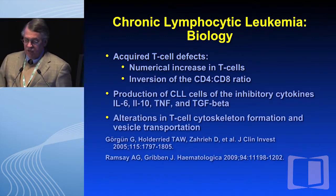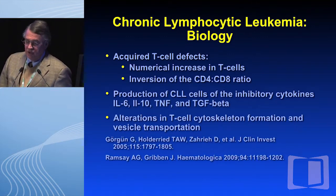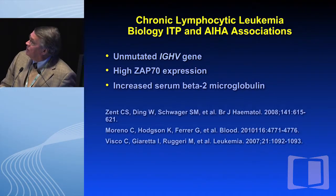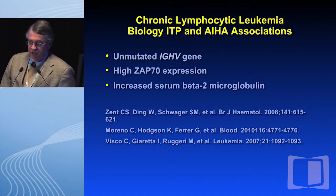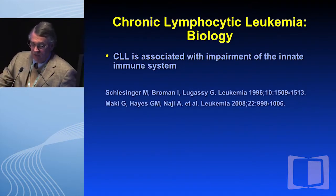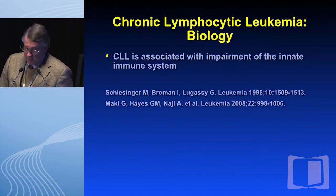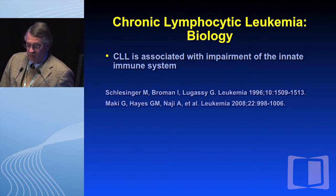There are acquired T cell defects: numerical increases in T cells, an inversion of the CD4/CD8 ratio, inhibitory cytokines, and alterations in T cell cytoskeleton formation and vesicle transformation. As for clinical markers, there are associations with unmutated IGVH gene, high ZAP70 expression, and increased serum beta-2 microglobulin. CLL is associated with an impaired innate immune system, and when you really look at this disease alongside acquired immune deficiency syndrome, they have remarkable overlap in presentations, clinical complications, and management implications.